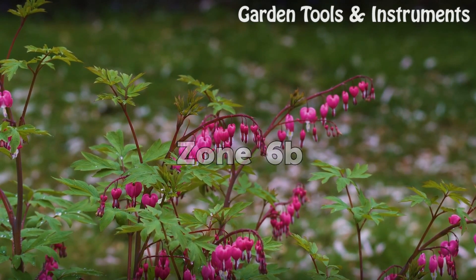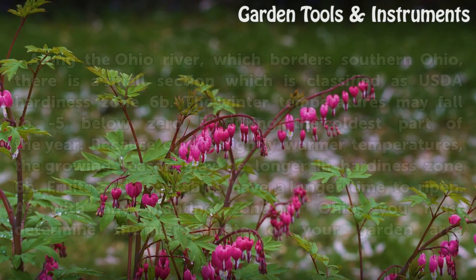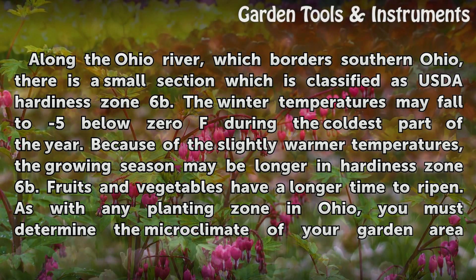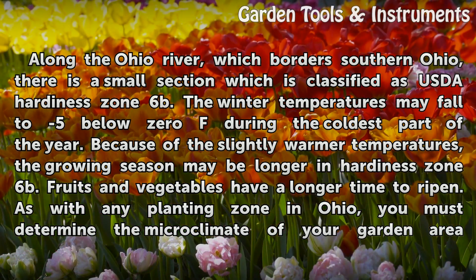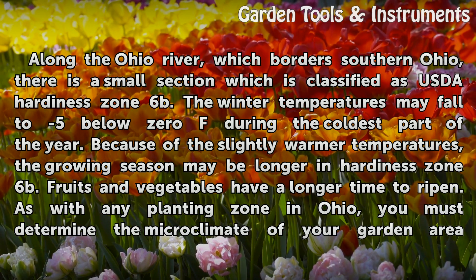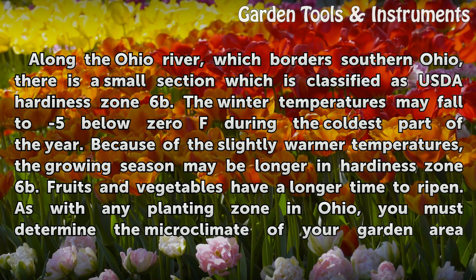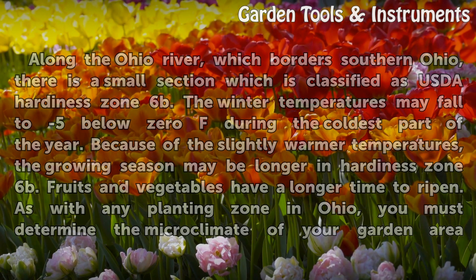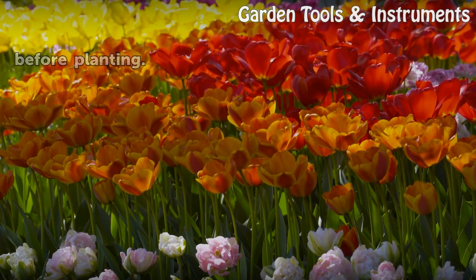Zone 6B. Along the Ohio River, which borders southern Ohio, there is a small section which is classified as USDA hardiness Zone 6B. The winter temperatures may fall to 5 below 0°F during the coldest part of the year. Because of the slightly warmer temperatures, the growing season may be longer in hardiness Zone 6B. Fruits and vegetables have a longer time to ripen. As with any planting zone in Ohio, you must determine the microclimate of your garden area before planting.